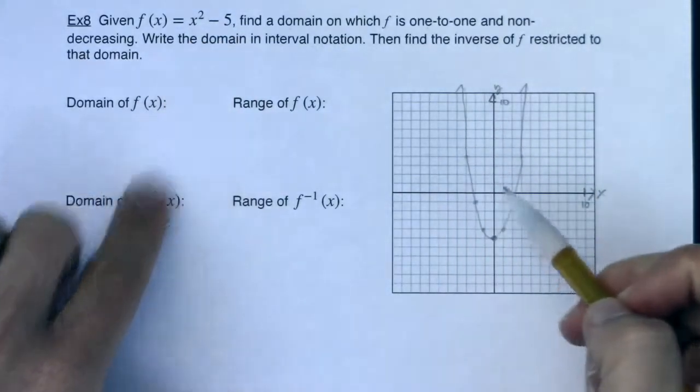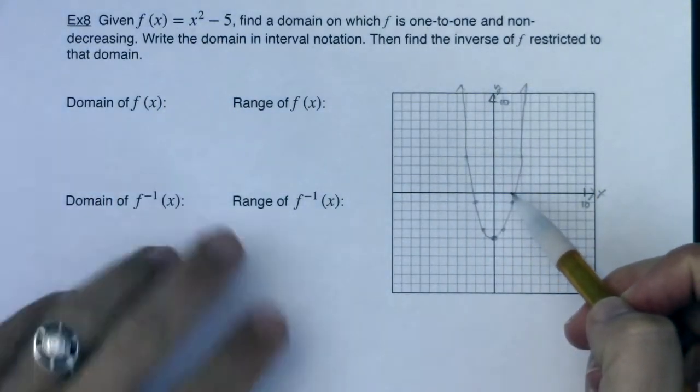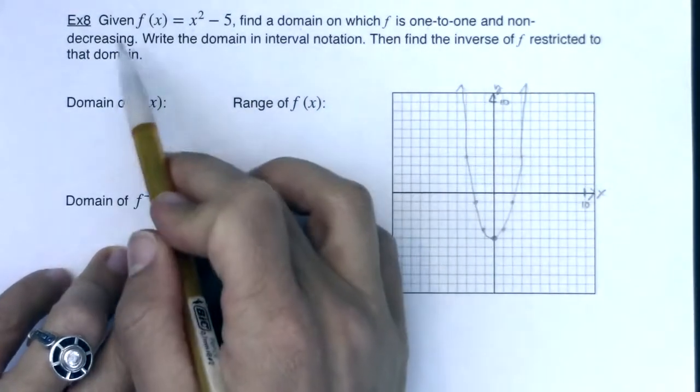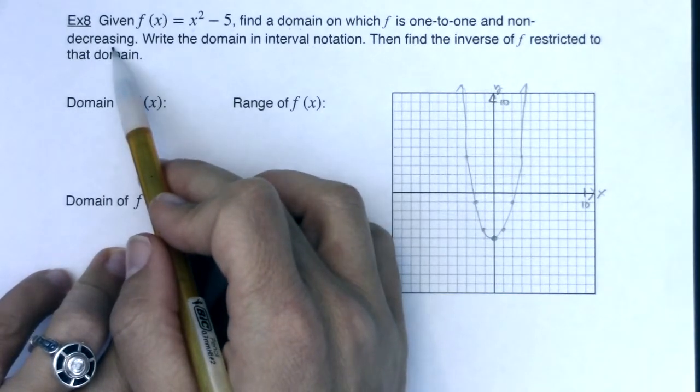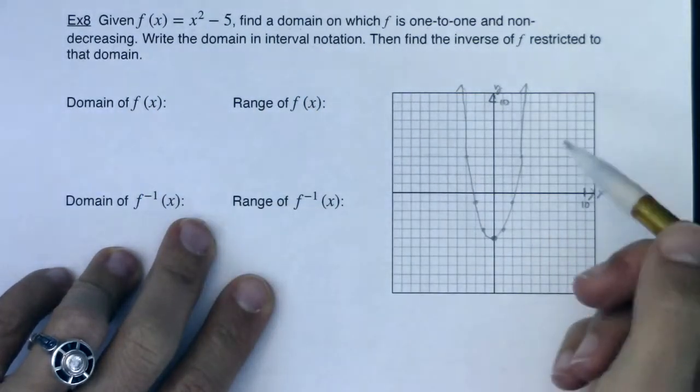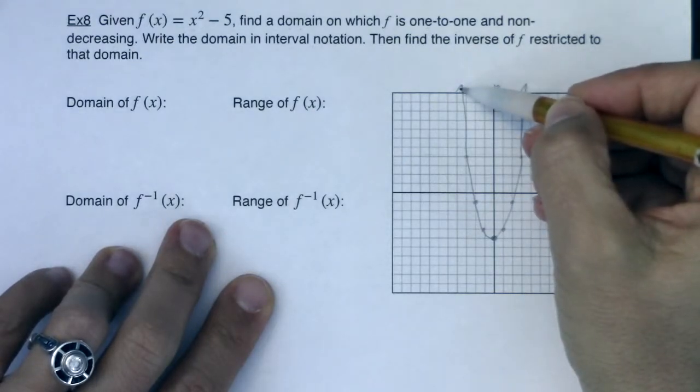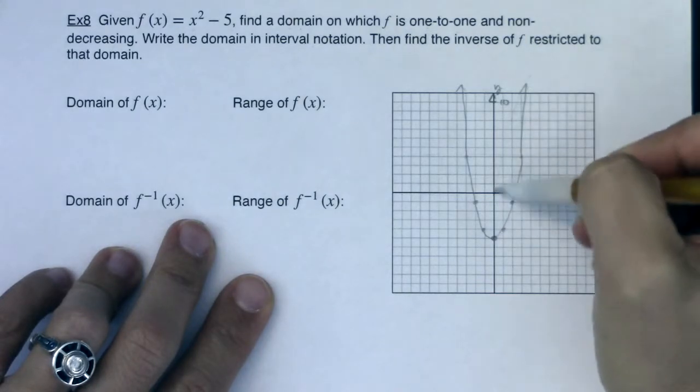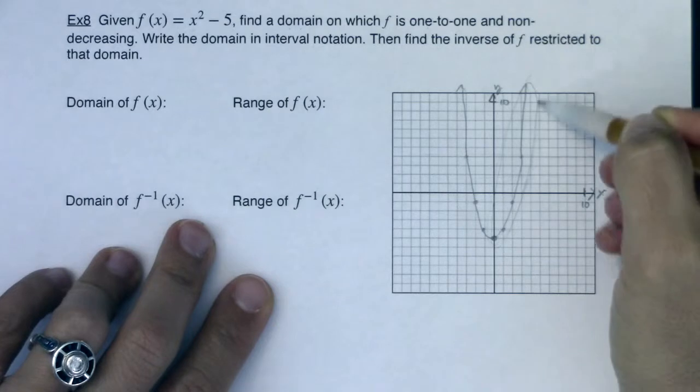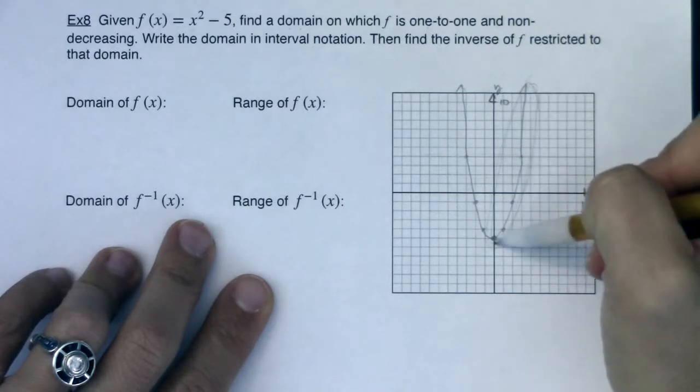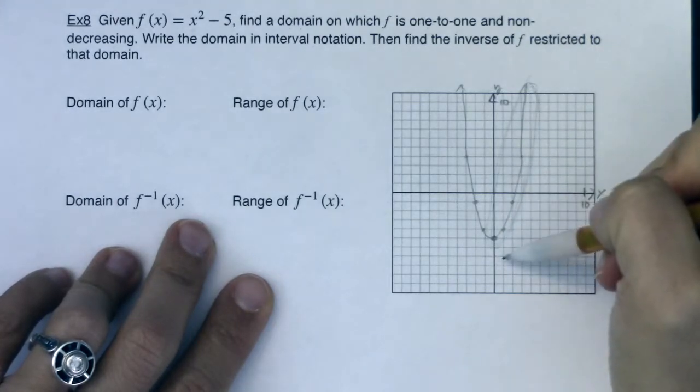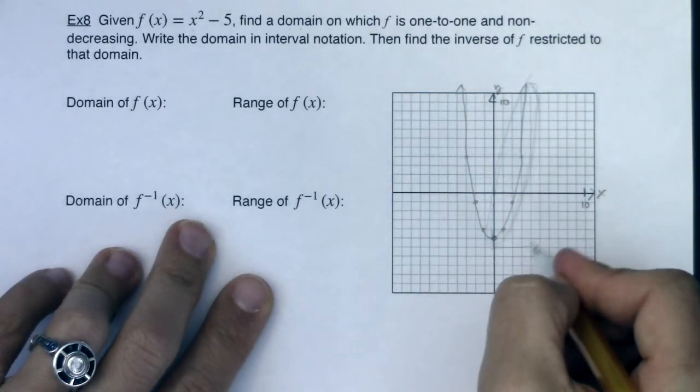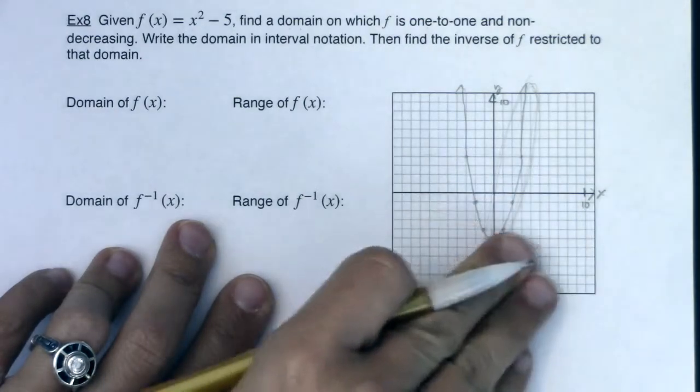You can make the sound effects if you want when you draw it. There we go. Again, fails the horizontal line test. Right now, it is not one-to-one, but it says find a domain on which f is one-to-one and non-decreasing. If I'm non-decreasing, it means I'm increasing or I'm just staying still. We can tell our function goes from decreasing to increasing. I only want this piece, the right piece of the parabola.